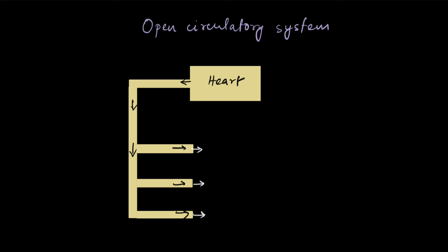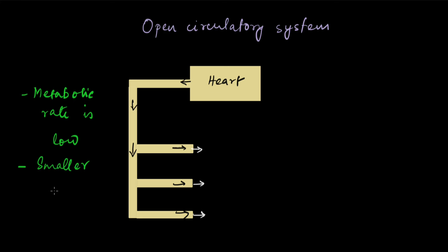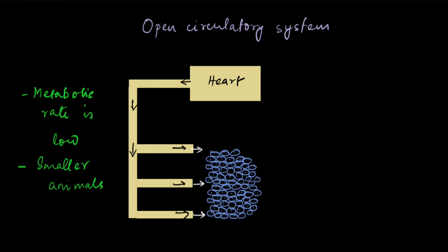Animals with an open circulatory system — like insects, other arthropods, and some mollusks — are small, so blood can easily diffuse from one part of the body to another. In their system, the heart pumps blood into blood vessels, and then the blood leaves the blood vessels and goes to the tissues. Unlike the closed system where the blood never directly touches the tissues, the blood flows out and bathes the tissues.